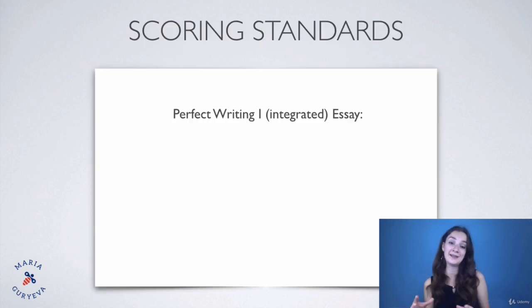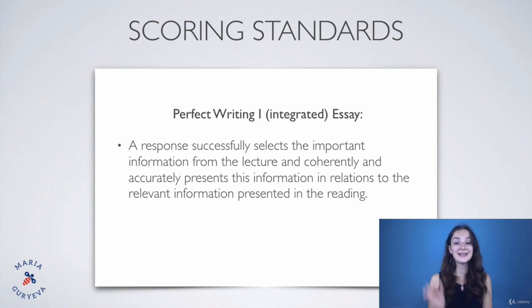Now let's discuss the scoring standards. How do you get the perfect score for writing number one, for the integrated essay? This is a copy-paste from the official standards. A response successfully selects the important information from the lecture and coherently and accurately presents this information in relation to the relevant information presented in the reading. Basically, you need to pick all the important information from the reading, all the important information from the listening, and then write it very accurately and coherently together.